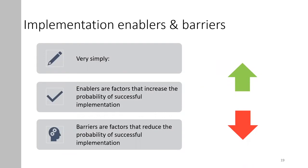You may have heard of implementation enablers and barriers. Enablers, or facilitators, are factors that increase the probability of successful implementation, while barriers are factors that reduce it. Think about a successful project you worked on — what were the enablers or key factors that helped it go well? Then think of a project that did not go according to plan — what were the barriers, what did not go well, and what would you change? Implementation is about leveraging the enablers and addressing the barriers.